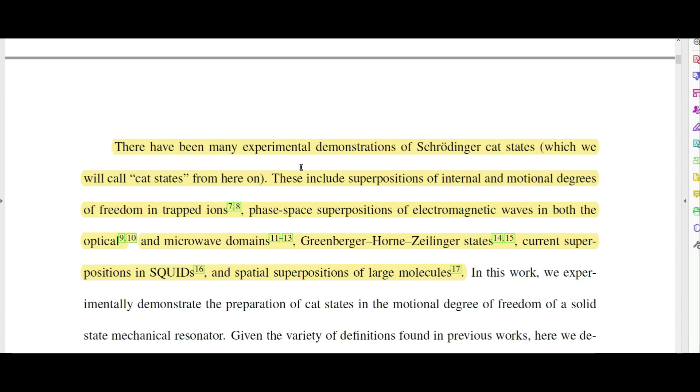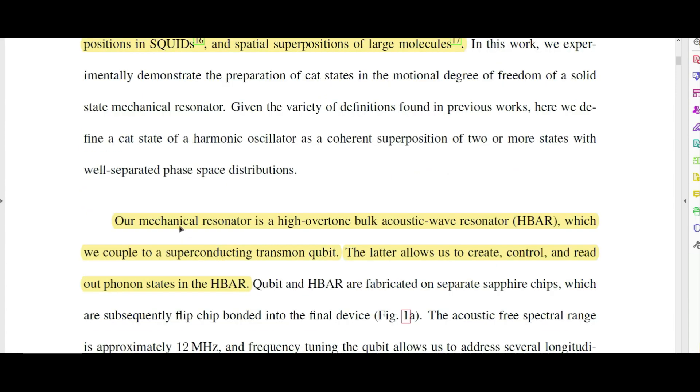There have been many experimental demonstrations of Schrödinger cat states, which we will call cat states from here on. These include superpositions of internal and motional degrees of freedom in trapped ions, phase space superpositions of electromagnetic waves in both optical and microwave domains, Greenberger-Horn-Zeilinger states, current superpositions in SQUIDs—which has to do with quantum computers using Josephson junctions—and spatial superpositions of large molecules.